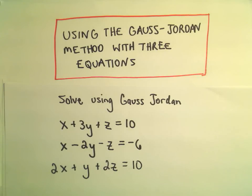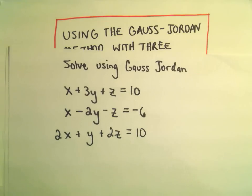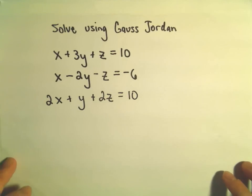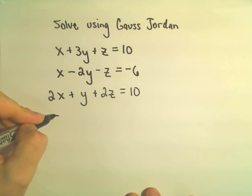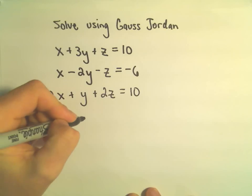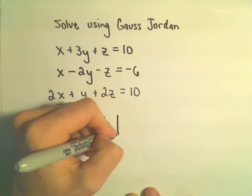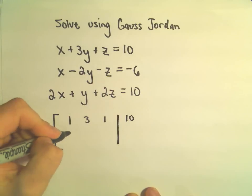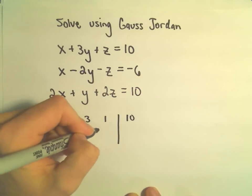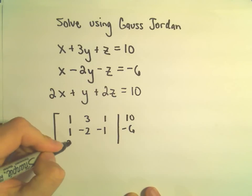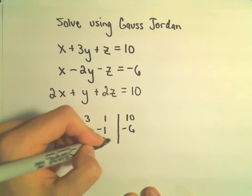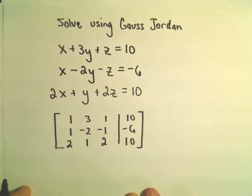In this video we're going to do an example of solving a system of linear equations using Gauss-Jordan. In this case we've got three unknowns. The first thing I'm going to do is simply turn this into a matrix. Our first row will use the coefficients 1, 3, 1, and 10. We've got 1, negative 2, negative 1, and negative 6 for our second row. And then we have 2, positive 1, and positive 2, and again a 10 for our third row.